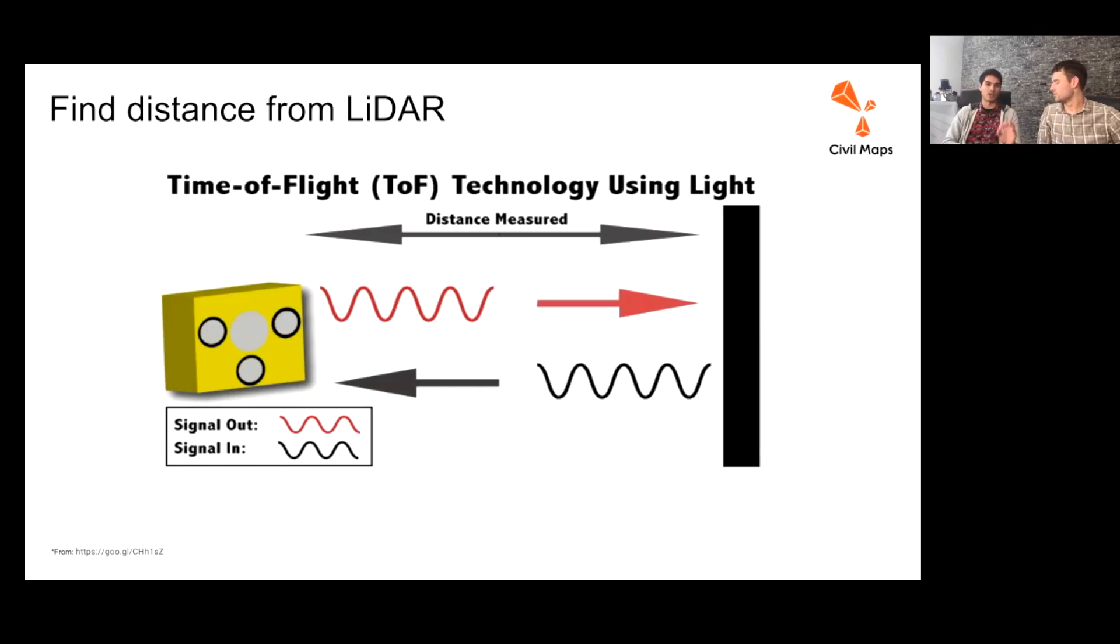LiDAR uses the same concept using very quickly emitted high-frequency laser beams, and using the speed of light we can also, using the same principle, measure the distance traveled, as well as intensity, and I'll get into the intensity which is related to the retro reflectivity of the objects that we get those lasers returned back to us from.